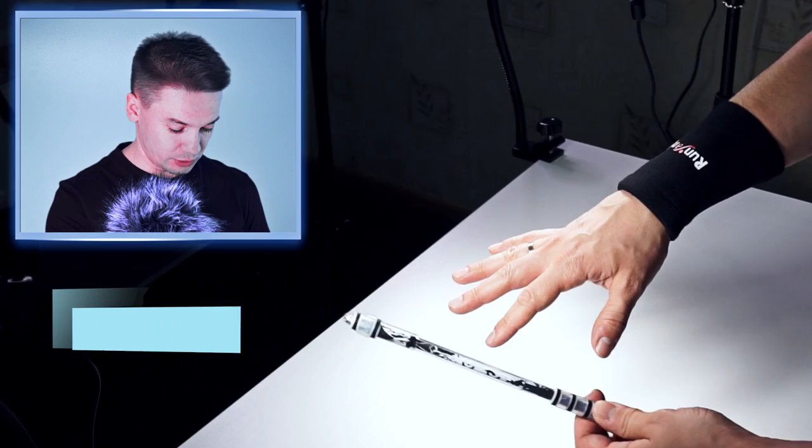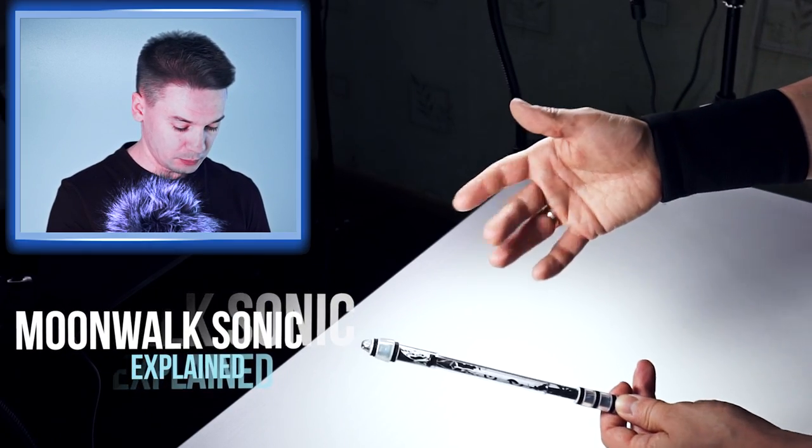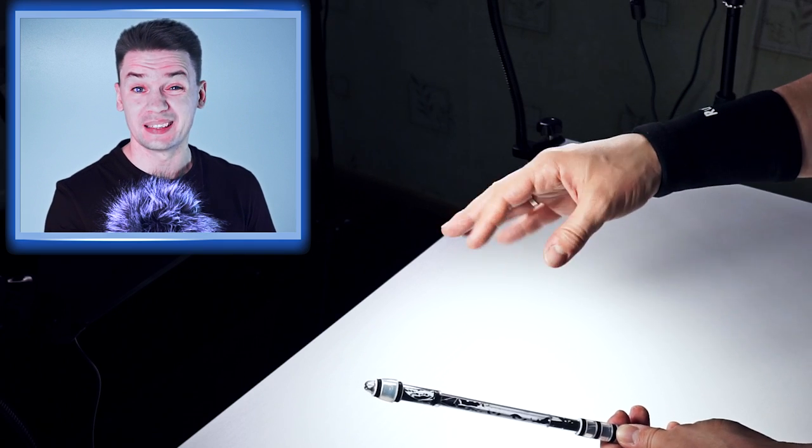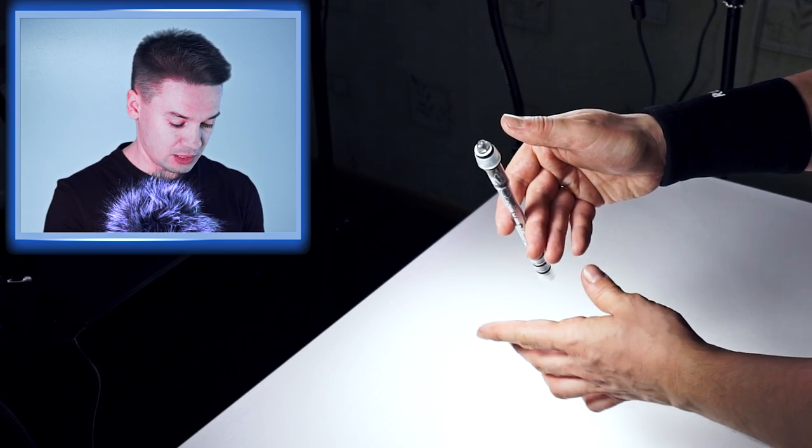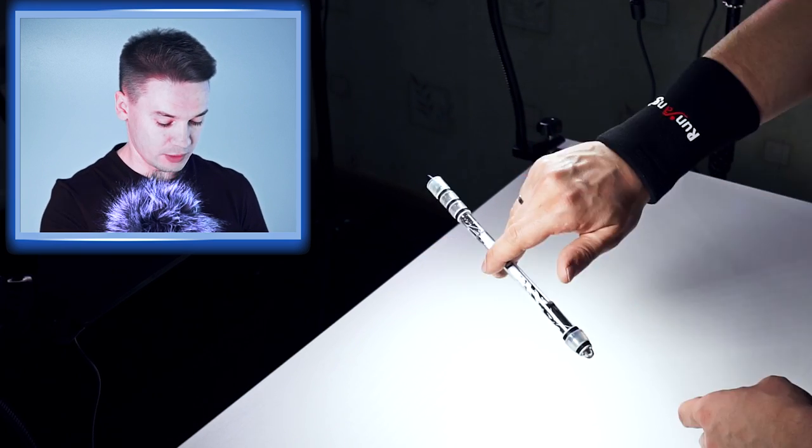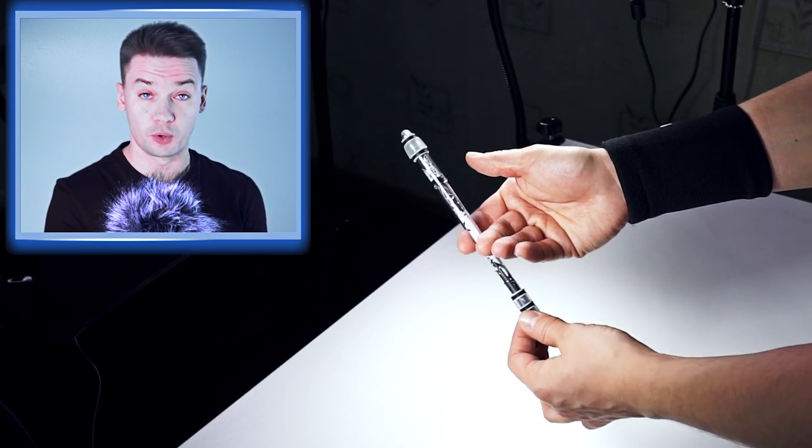So we start by taking the pen mod in slot 1-2 between index and middle finger. Fingers are relaxed, a little bit bent, don't tense them. Put your pen mod between them, toward these fingers, your palm is up. This will be the starting position for Moonwalk Sonic.